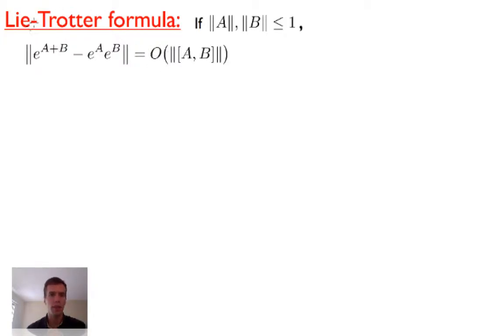As I explained in class, the Lie-Trotter formula gives us a way of approximating the exponential of the sum of two matrices by the product of the exponentials of the individual matrices.